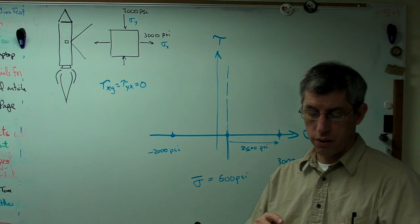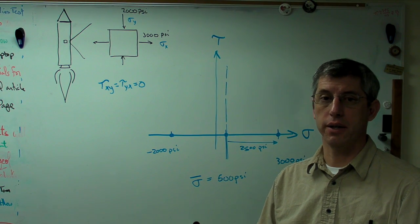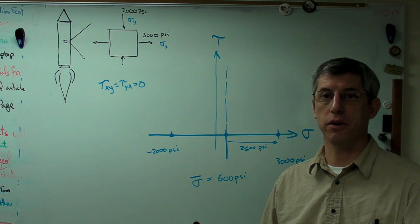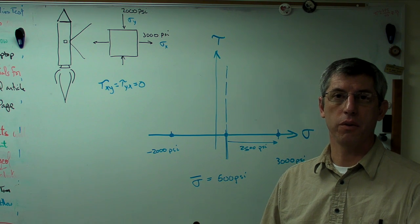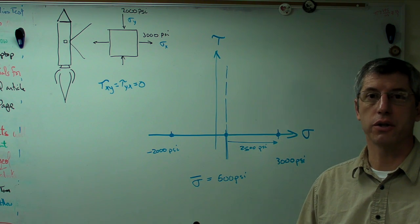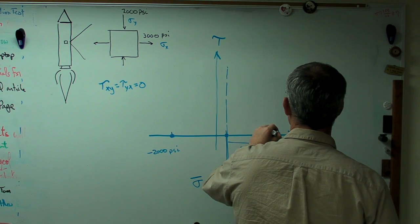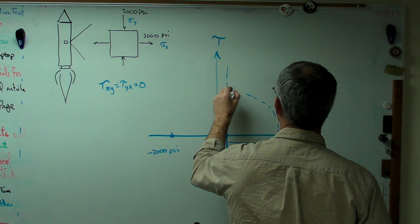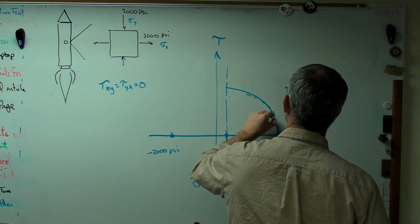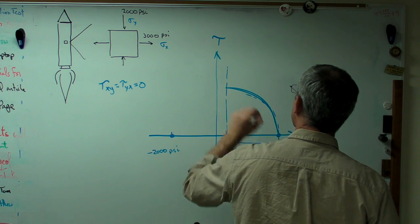All right. Now I've got location of the center and the radius. That's everything there is to know about a circle. Once you know the radius and where the center lies, you can construct the circle. So I'm going to just sketch this in here, see how close I can come to this quarter circle.